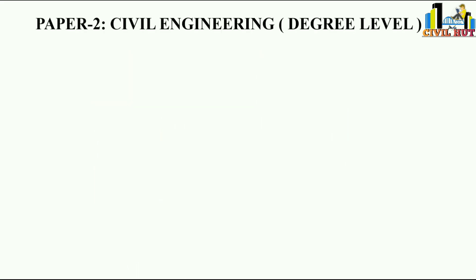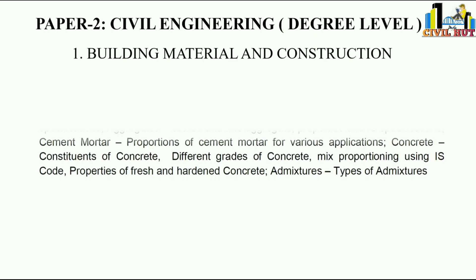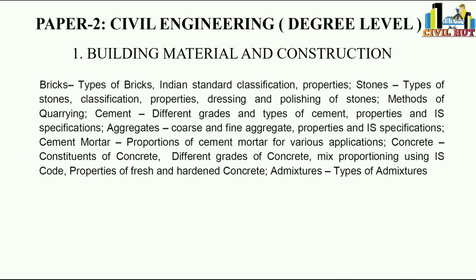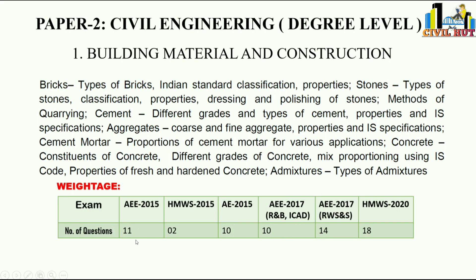In Paper 2 Civil Engineering, the first subject is Building Materials and Construction. Topics include bricks, stones, cement, concrete, admixtures, and so on. This subject has good weightage — historical data shows 11, 10, 10, 14, 18 questions — so we may get around 10 questions in the exam. This subject is important for the AEE exam.